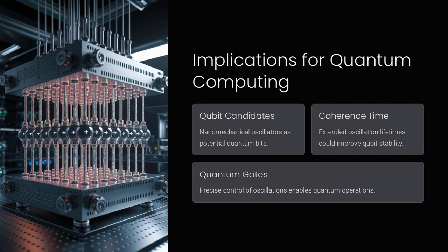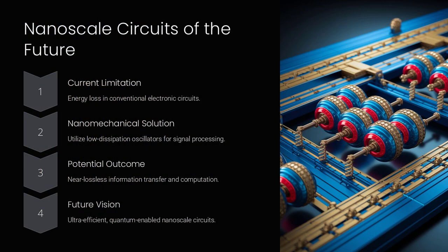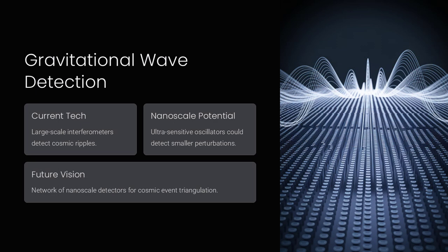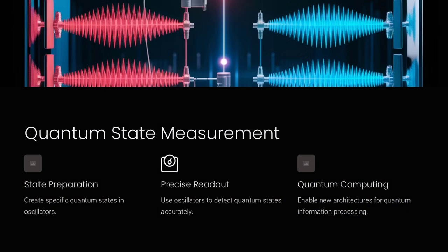If we can unlock the secrets of anomalous damping and energy dissipation at the nanoscale, we may discover entirely new ways to control motion at the quantum level, bridging the gap between classical mechanics and quantum technology.